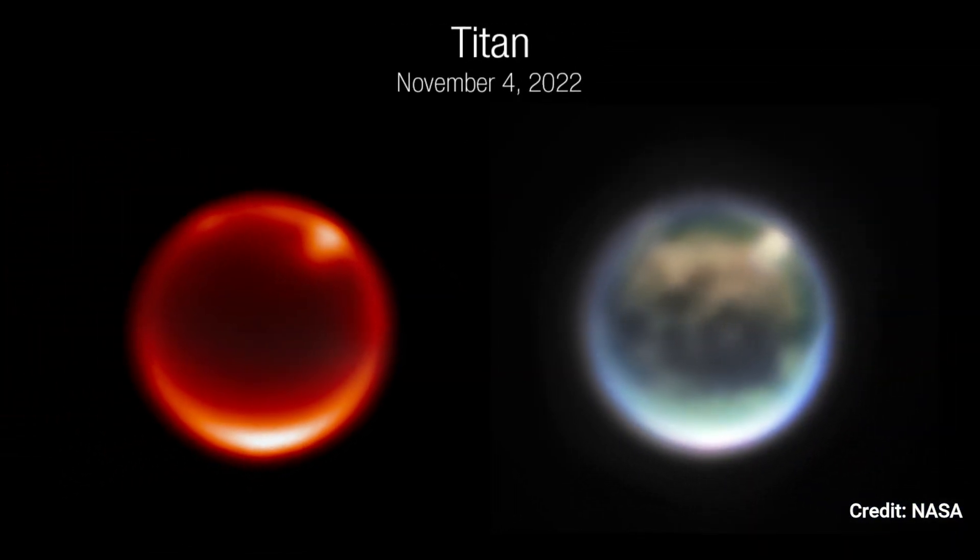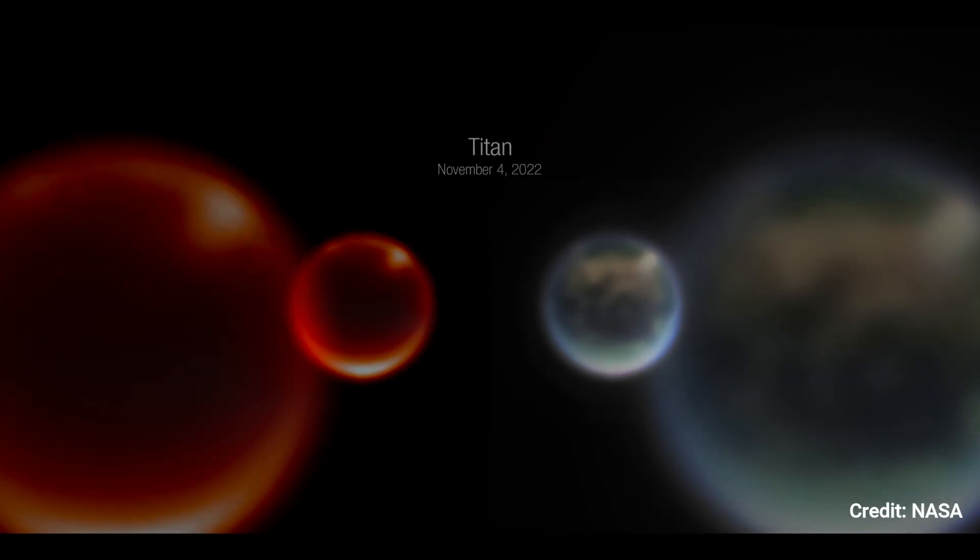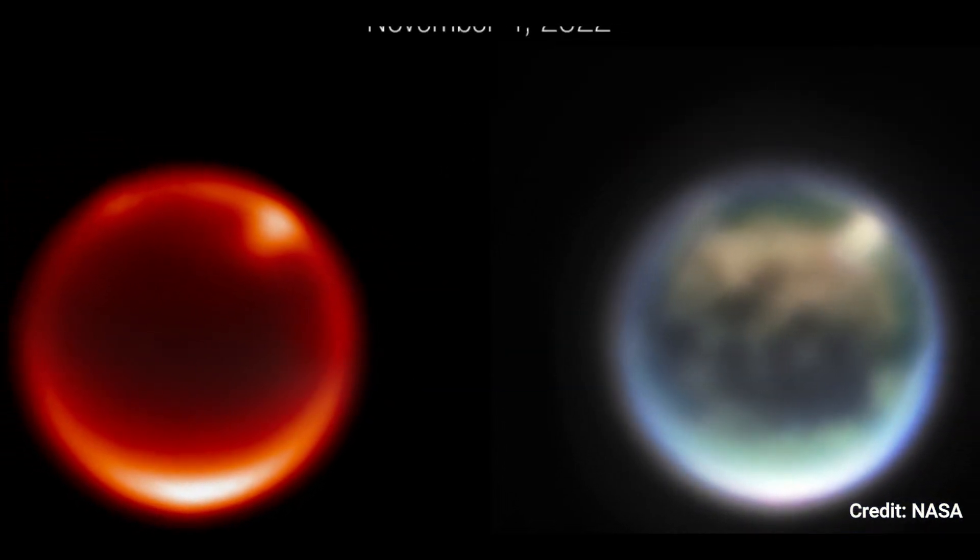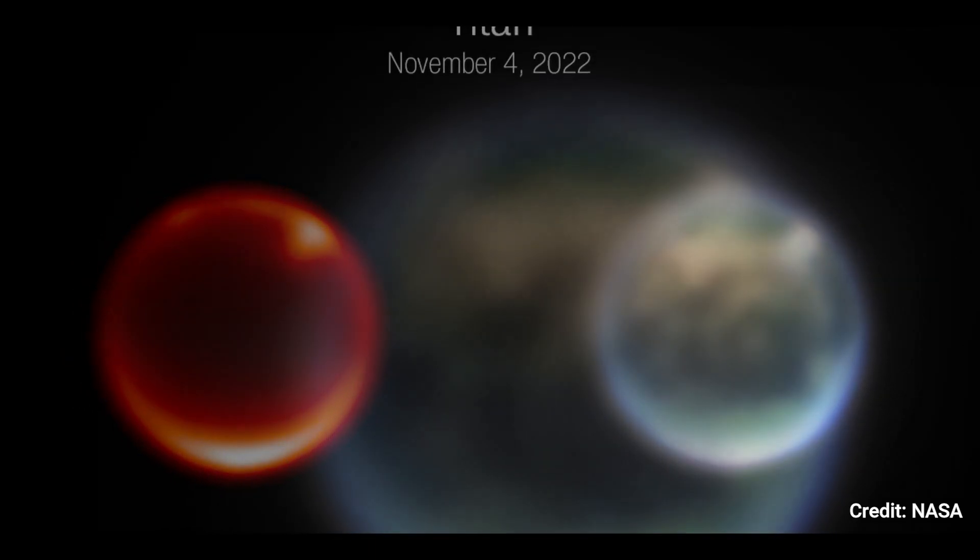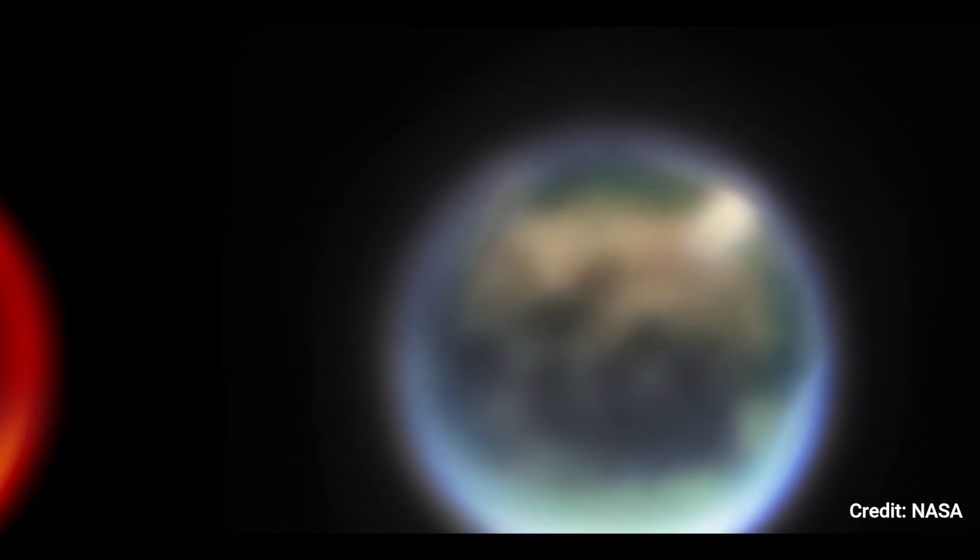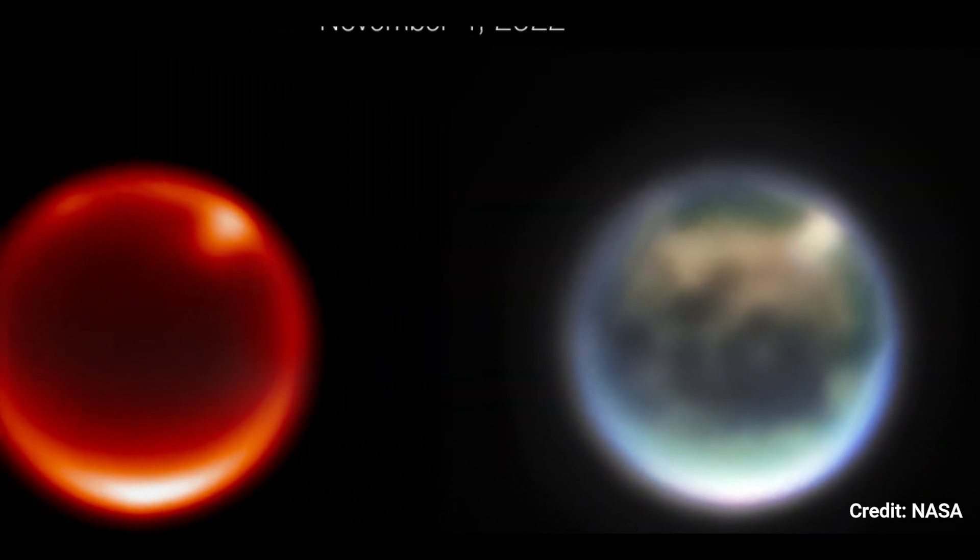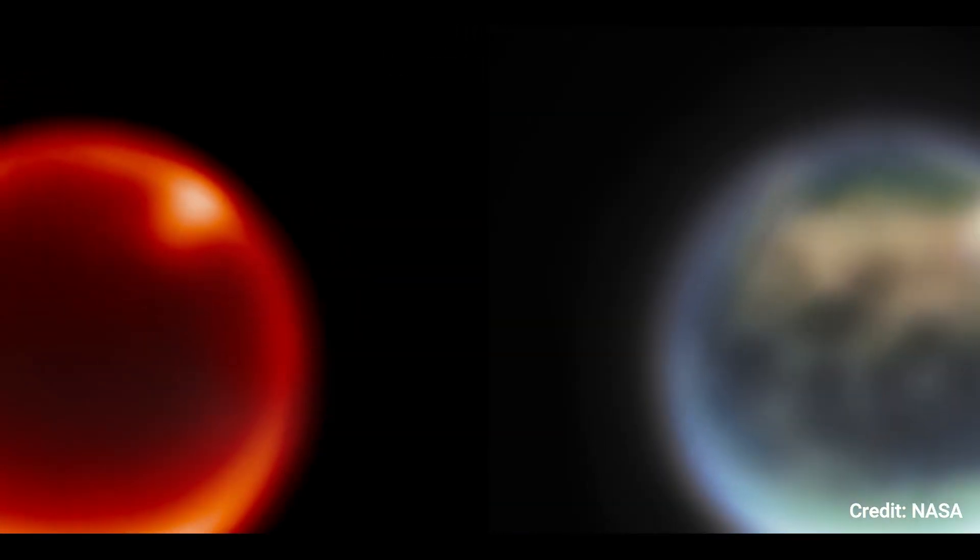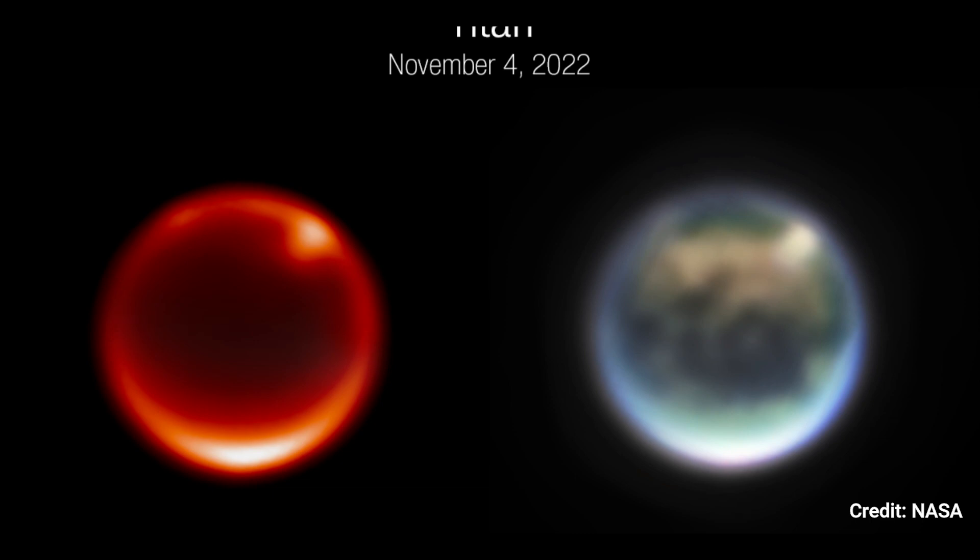A color composite image created with NIRCam filters: Blue F140M, Green F150W, Red F200W, and Brightness F210M. Several major surface features are labeled. Kraken Mare is a methane sea. Belet is made up of dark colored sand dunes. And Adiri is a brilliant albedo feature.